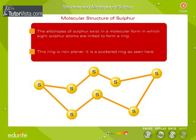The allotropes of sulphur exist in a molecular form in which eight sulphur atoms are linked to form a ring. This ring is non-planar — it is a puckered ring, as seen here.